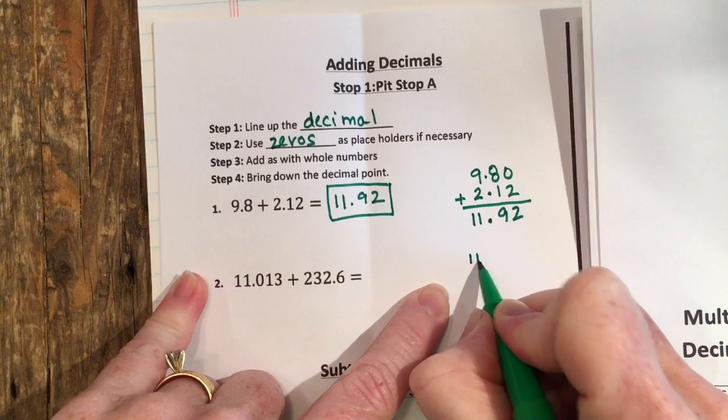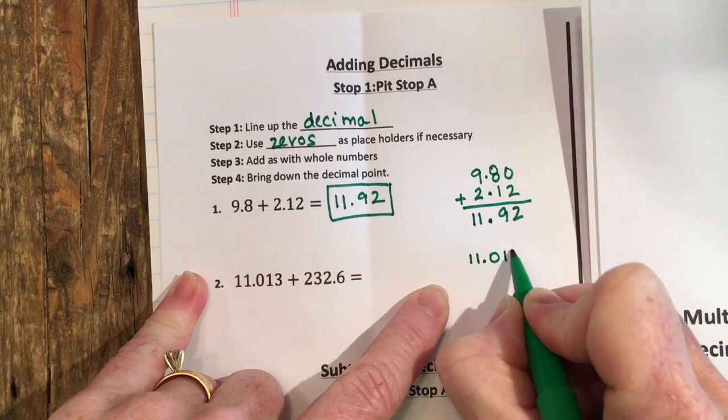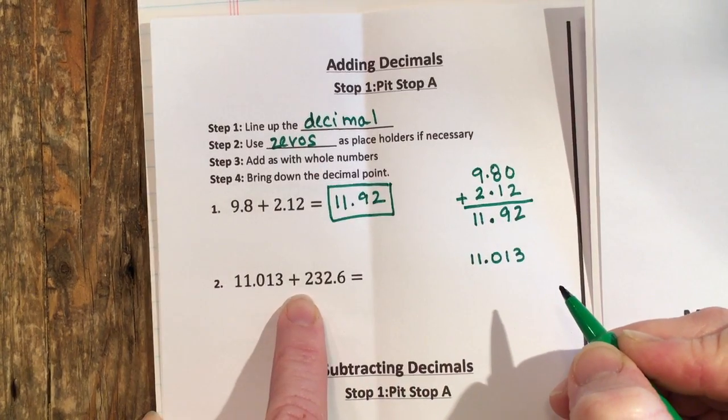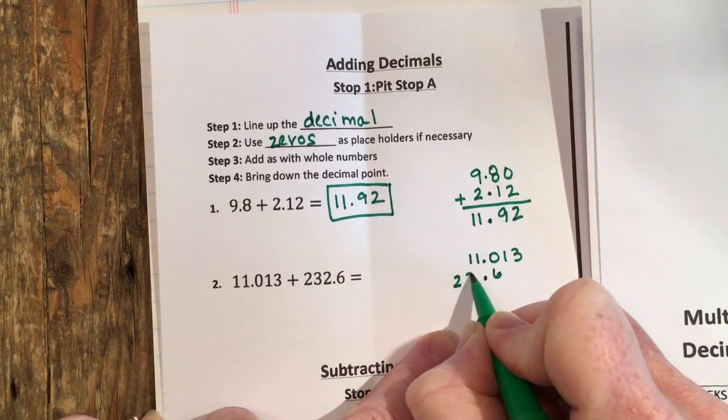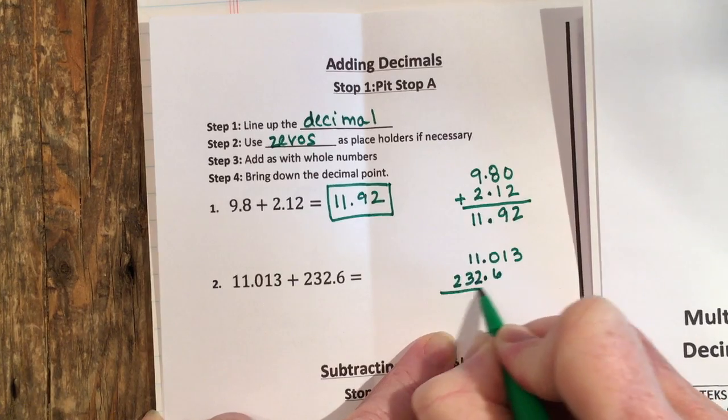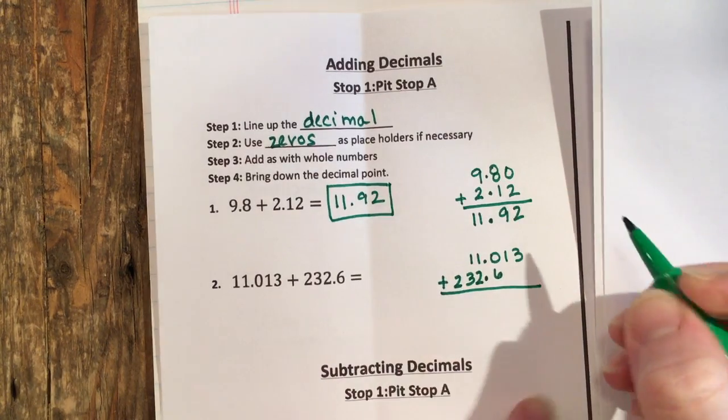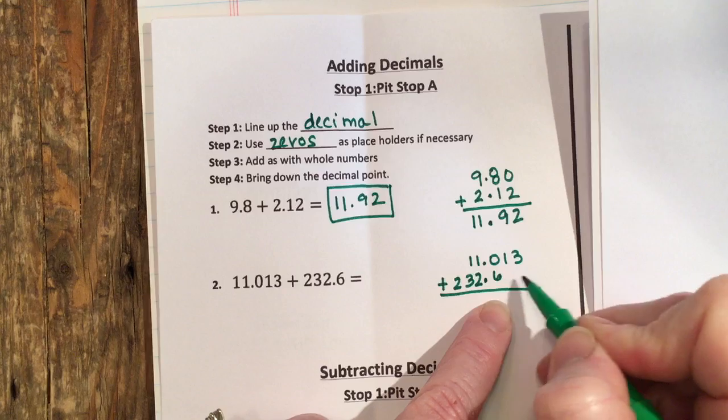All right, let's try the next one. I have 11.013 and 232.6, so the 0.6 is going to go here. That means the 232 is out here. So when I line this one up then I can see that I need some zeros right here to fill in these gaps.